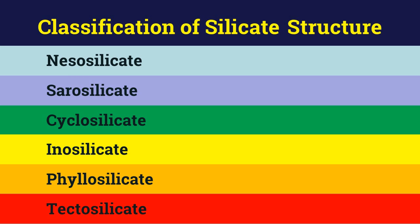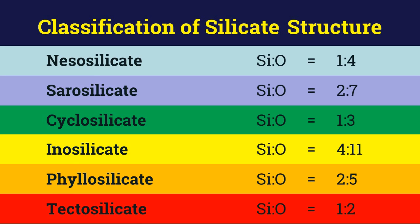This results in a silicate mineral being either a nesosilicate, sorosilicate, cyclosilicate, inosilicate, phyllosilicate or tectosilicate. Different ways of grouping the tetrahedra give rise to different ratios of silicon to oxygen in the silicate mineral. From nesosilicates to tectosilicates, the silicon to oxygen ratio keeps on increasing. We shall now discuss each category in detail.